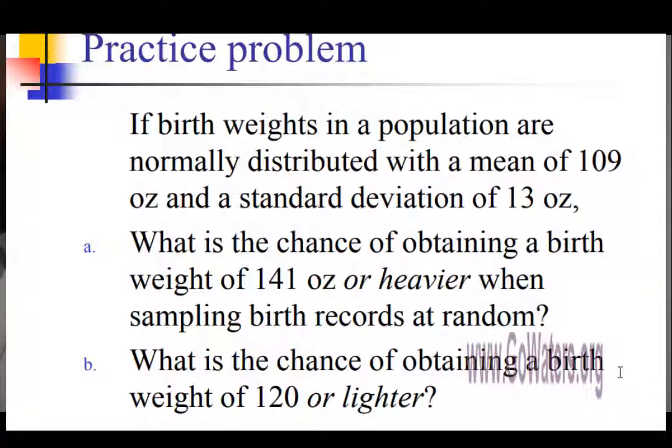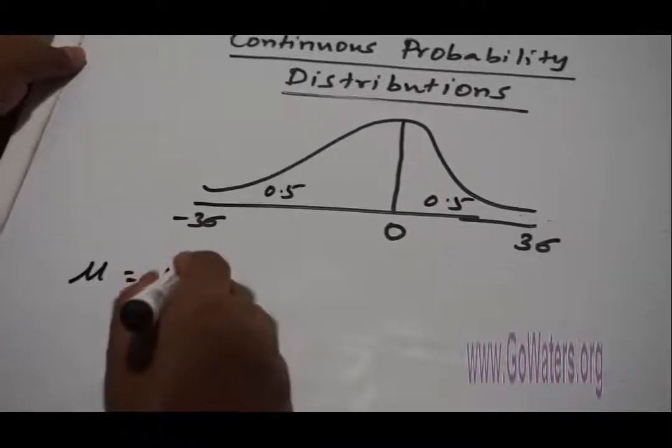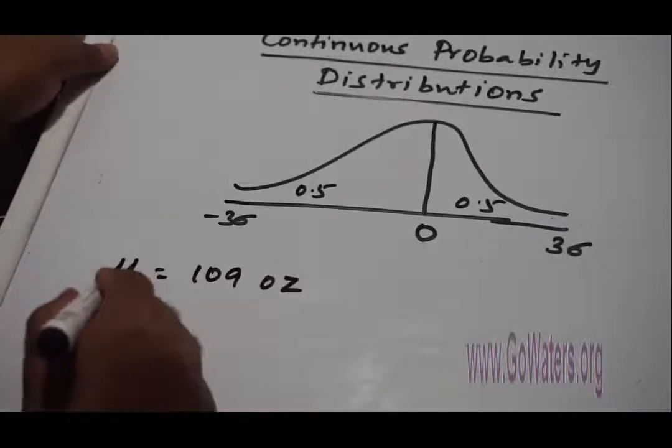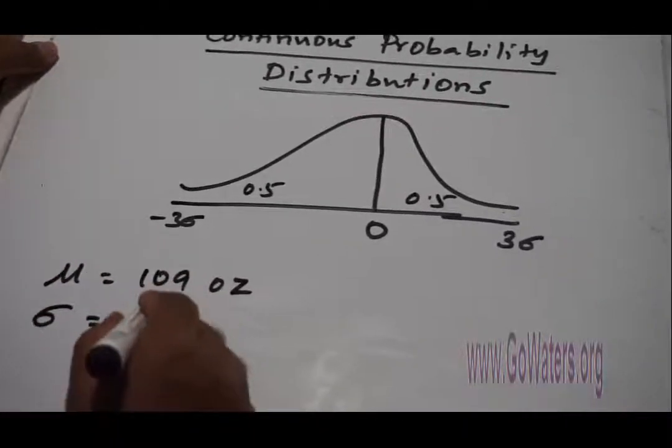So μ, the mean μ, is equal to 109 ounces, and the standard deviation σ is equal to 13 ounces.